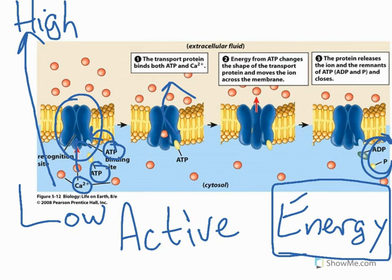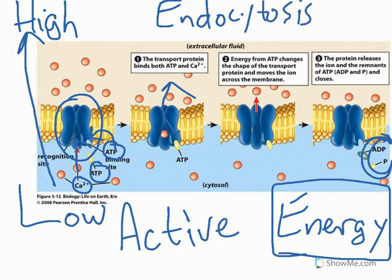Also, make sure that you look at the bulk forms of transport — endocytosis and exocytosis. Those are just ways that the cell moves large volumes of material in or out.